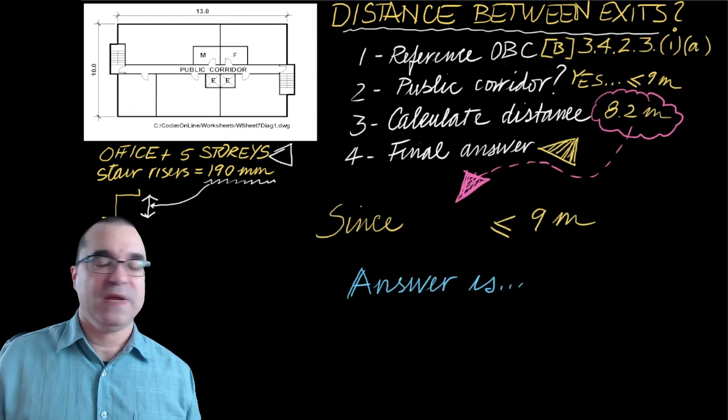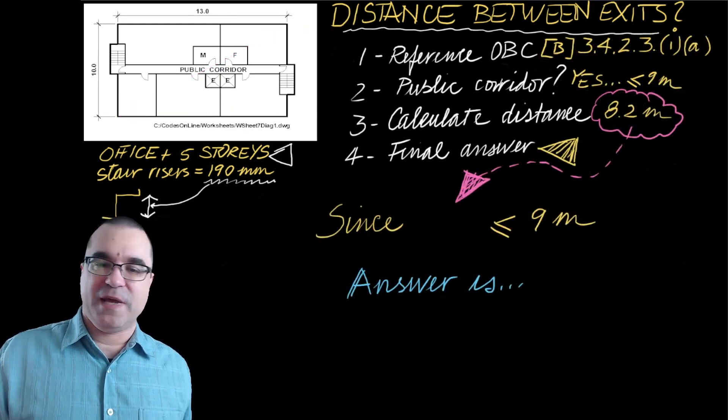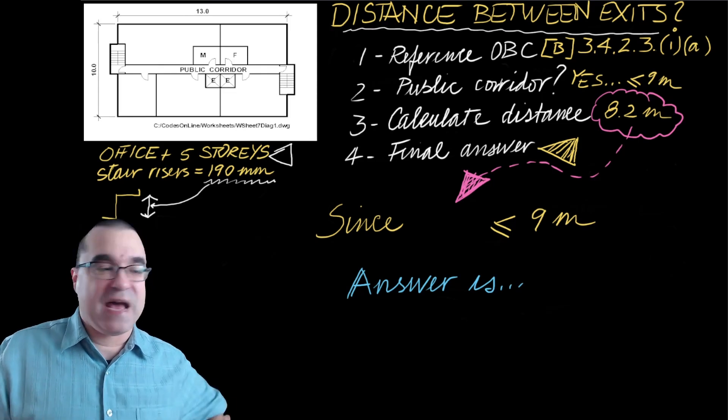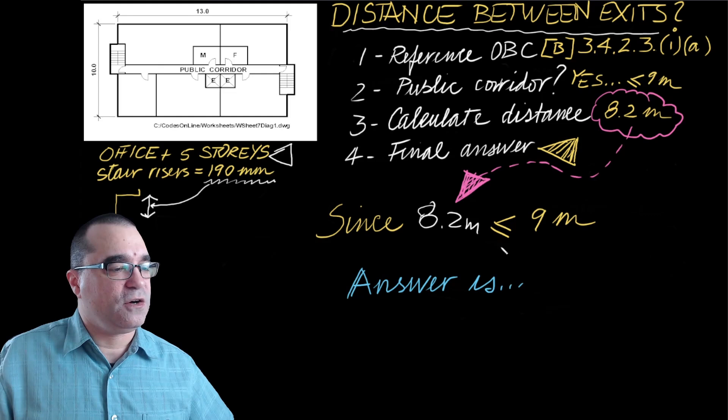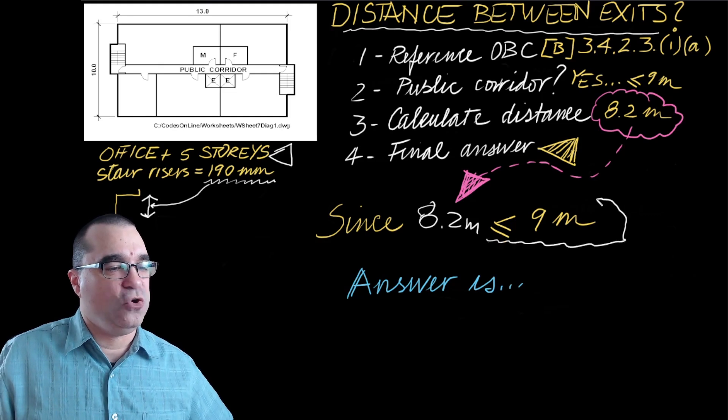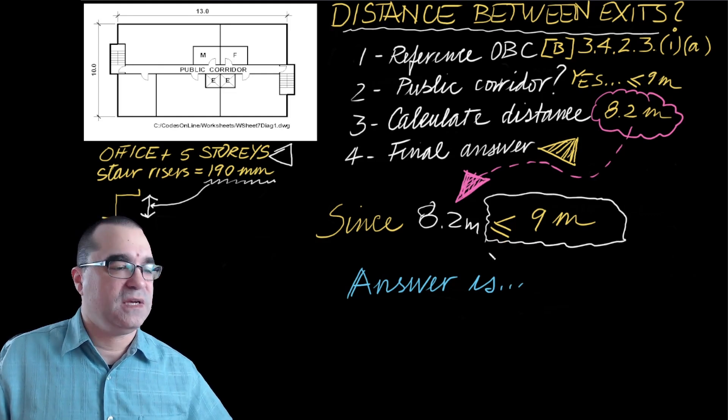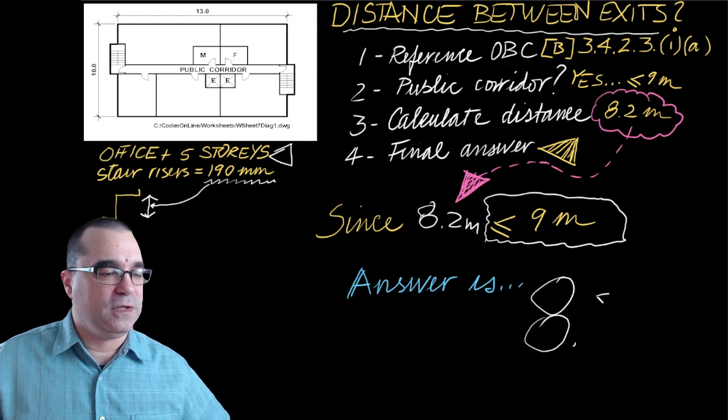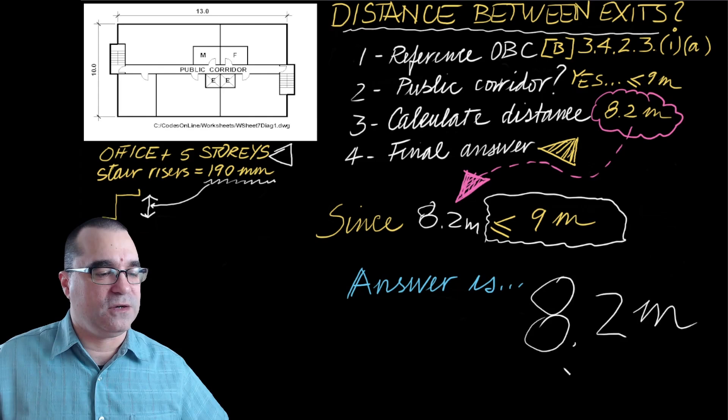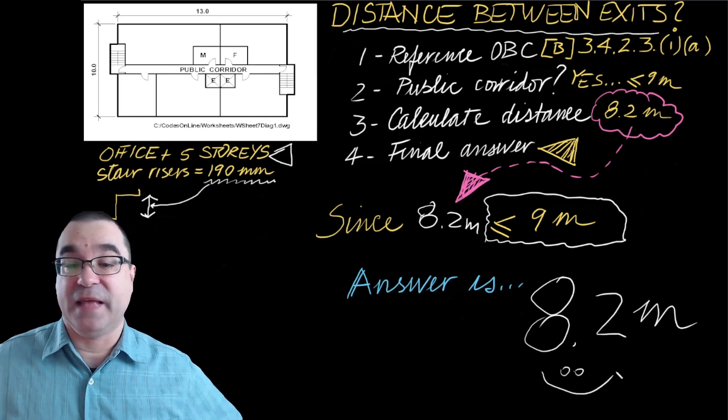Based on step number four, now that we know what the dimension is, what that distance is—it's 8.2 meters—and because it is no more than nine meters, the answer is 8.2 meters. And there you go. I hope that was helpful.